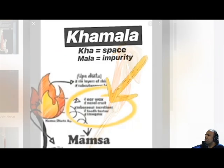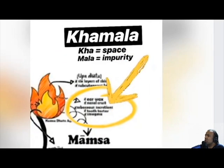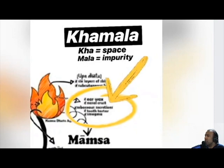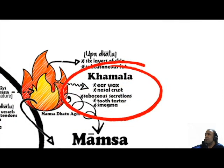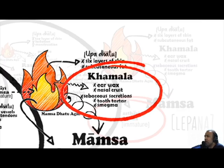The inferior byproducts of Mumsadatu are called Kamala. Ka means space; Mala means impurity. Therefore, the inferior byproducts of Mumsadatu remove impurities in the form of nasal crust, earwax, sebaceous secretions, tartar on teeth, and smegma.